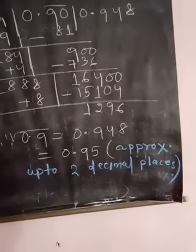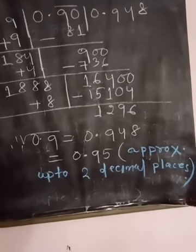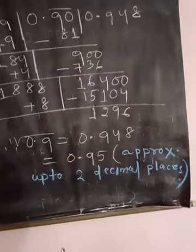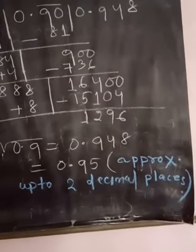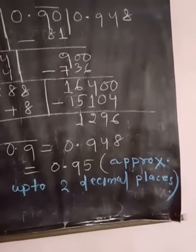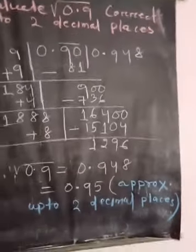Put 8 below the 1888 and write down the quotient. After multiplying 1888 by 8, it will be 15104. Subtract: 16400 minus 15104 equals 1296.